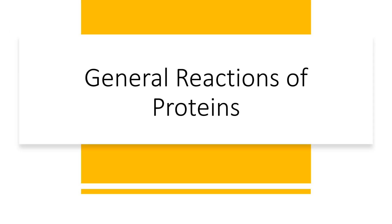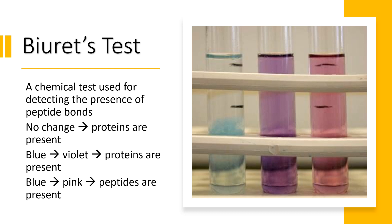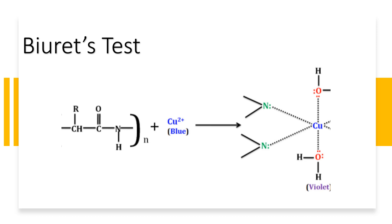Let us now take a look at the general reactions of proteins. Biuret's test is a chemical test used for detecting the presence of peptide bonds. If the color changes from blue to violet, it means proteins are present. If the color changes from blue to pink, then peptides are present. When treated with copper sulfate in the presence of a base such as sodium hydroxide or potassium hydroxide, the nitrogen in the peptide bonds reacts with copper(II) ions to form a violet-colored complex called Biuret. The minimum requirement for a positive Biuret's test is two peptide bonds in the molecule.